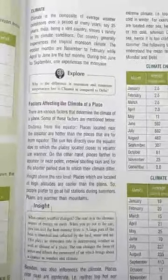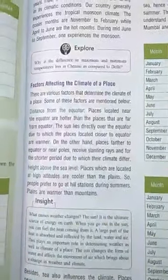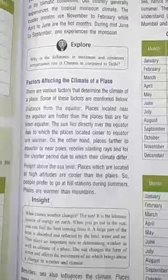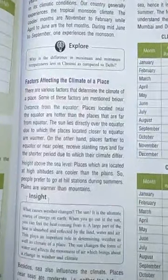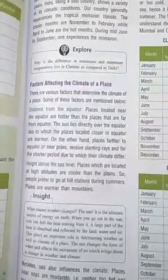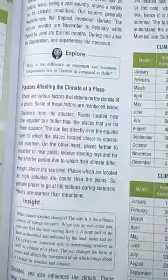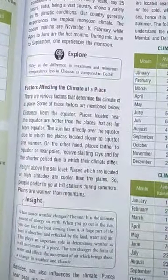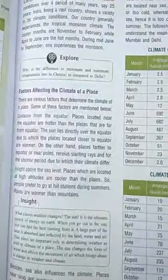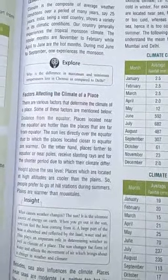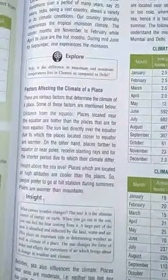Factors affecting the climate of a place include distance from the equator. As the distance from the equator increases, the climatic condition changes. Places located near the equator are hotter than those far from it, because sunlight falls directly over the equator. Places farther from the equator, near the poles, are cooler. Also, places at higher altitude are cooler than the plains.